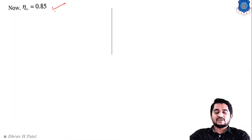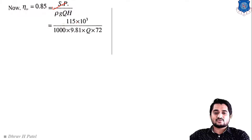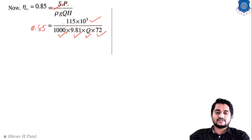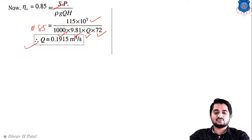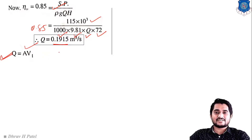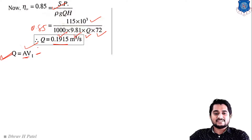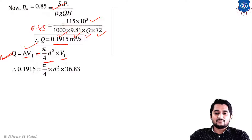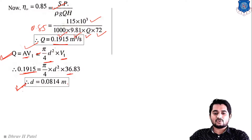Now using the overall efficiency equation: eta_0 equals shaft power divided by water power equals SP divided by (rho × Q × g × H). Substituting: 0.85 equals (115 × 10³) / (1000 × Q × 9.81 × 72), giving discharge Q equals 0.1915 m³/s. Using the discharge equation Q equals area of jet times jet velocity: 0.1915 equals (pi/4 × d²) × 36.83, from which we find the jet diameter d equals 0.0814 m.